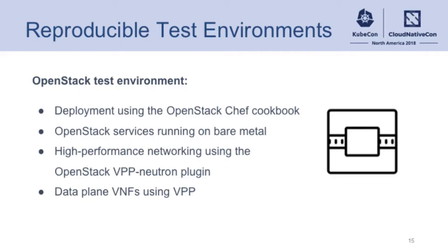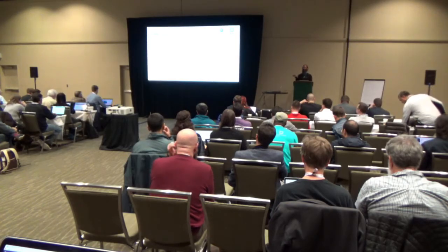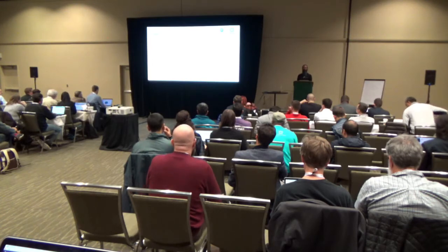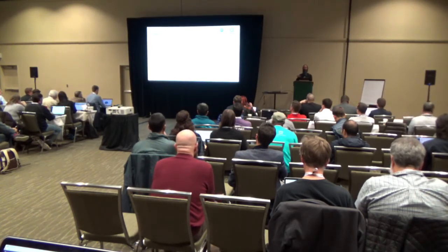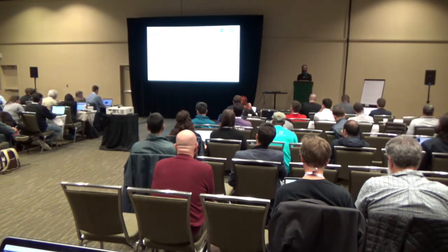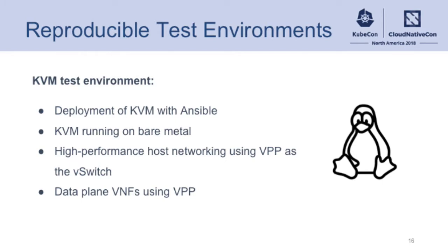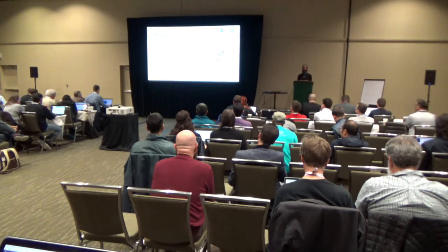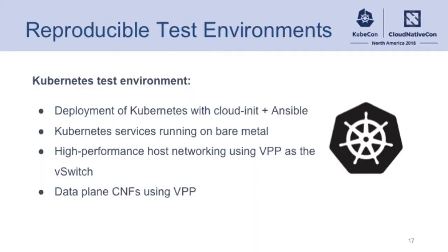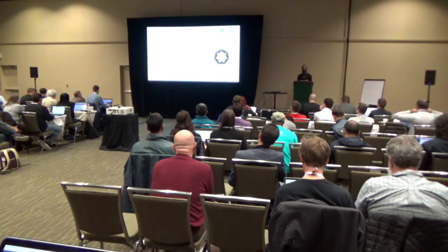For OpenStack, we're using OpenStack's Chef Cookbook to provision most of the cluster — it's all bare metal. VPP is used for all of the networking, both on the V-switch and for the VNFs themselves. KVM would be another one for VNFs, very similar — bare metal, using Ansible for provisioning and then VPP again for all the networking. For Kubernetes, same thing — we're using CloudInit which kicks off a bunch of Ansible, it's bare metal for all the services, trying to get as close as possible for these.